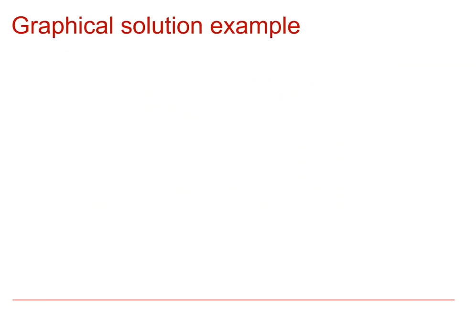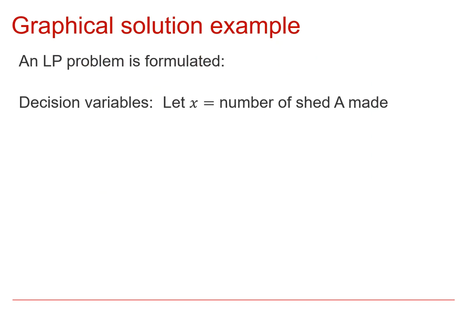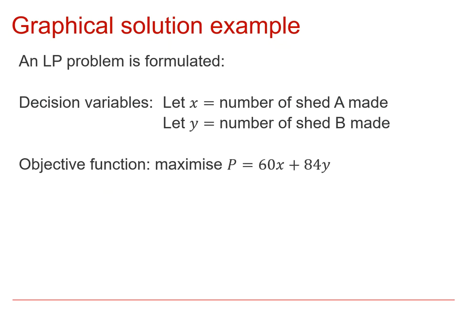Now, just to recap from the previous video, in that video we were looking at this linear programming problem. x and y were representing the numbers of two different types of shed. We had an objective function given to us, which was P equals 60x plus 84y.